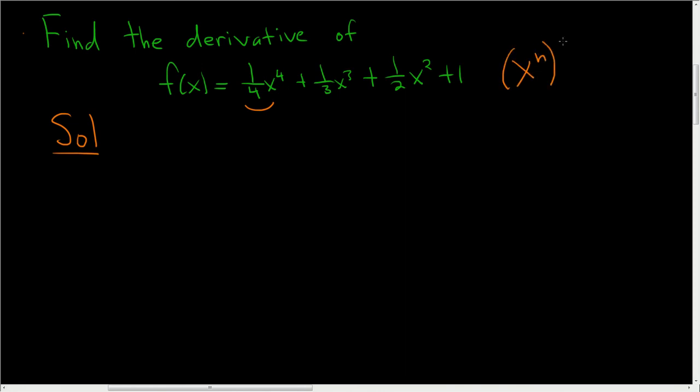And remember, if you have x to a power, when you take the derivative, you just bring this number downstairs. So n times x to the n minus 1, and you subtract 1. So let's do it.